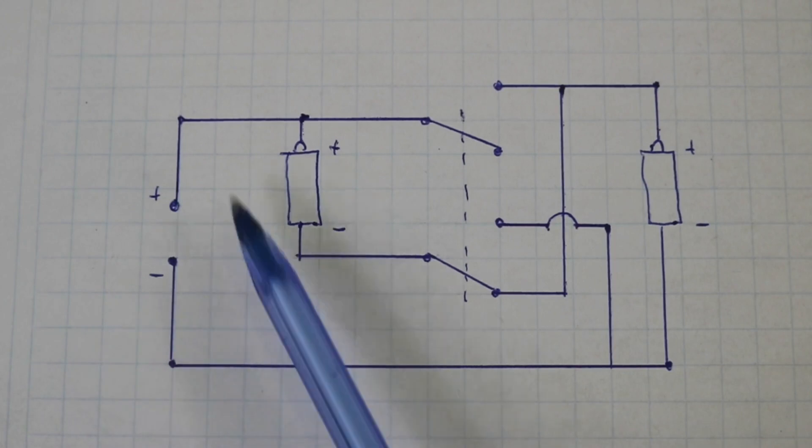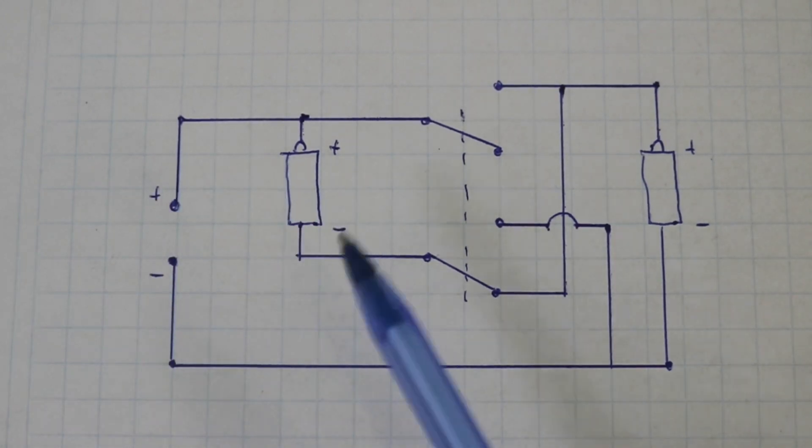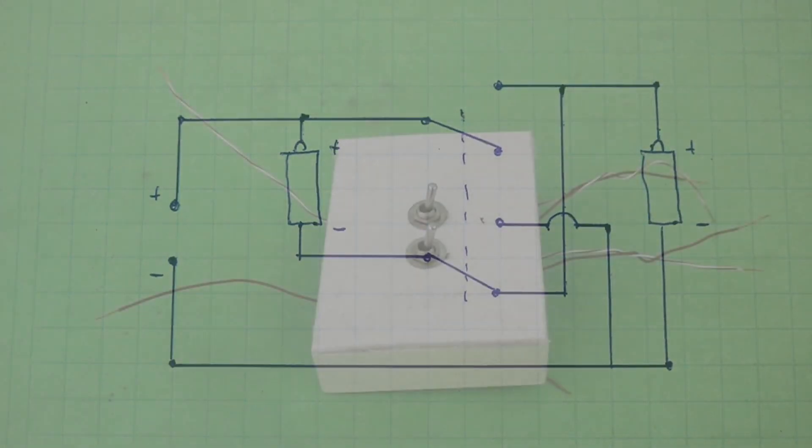So here at the output you will have double the voltage of a single battery or the sum of your two batteries. Of course, you need to flip both switches at the same time.